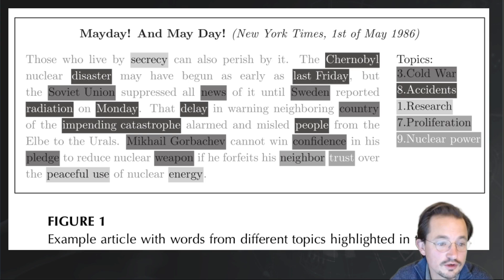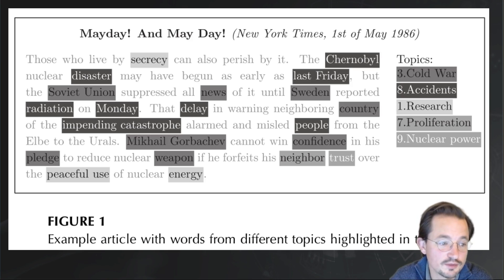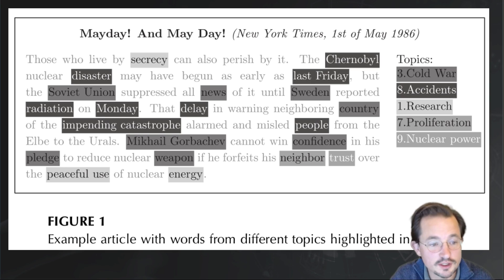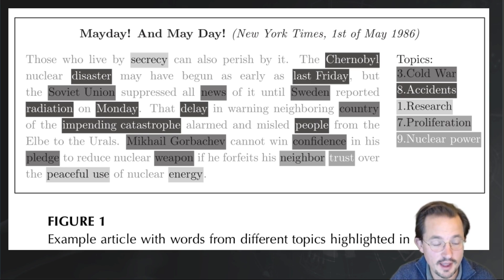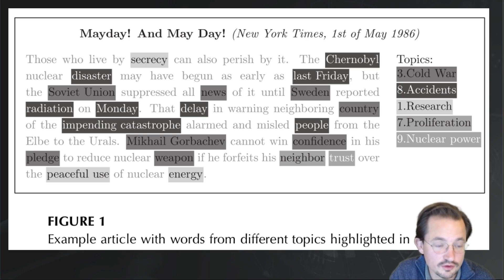There are words like Soviet Union, country, Gorbachev, weapons, pledges, confidence, that are more clearly about the Cold War. And there are words like secrecy, peaceful use, and energy, that we call the research topic. The first question is probably how do you actually assign those topics. This is one of the tools you have — you can look at the article, see which words are assigned to which topics, and that gives you an idea of how the words are used.